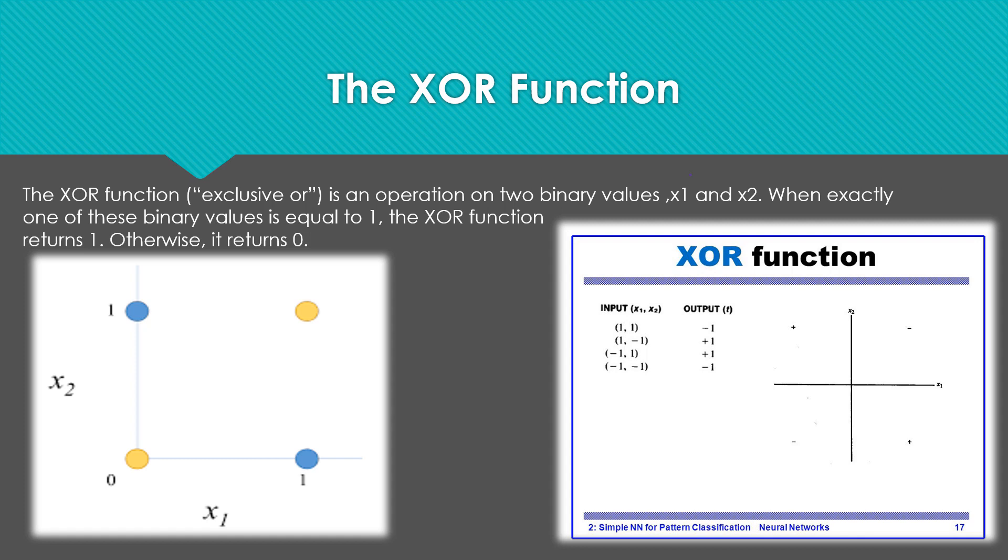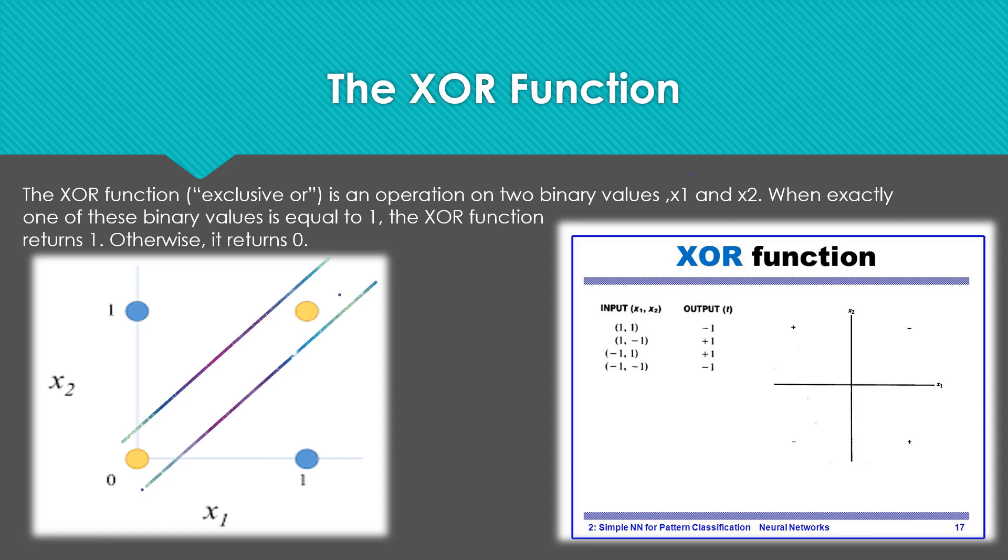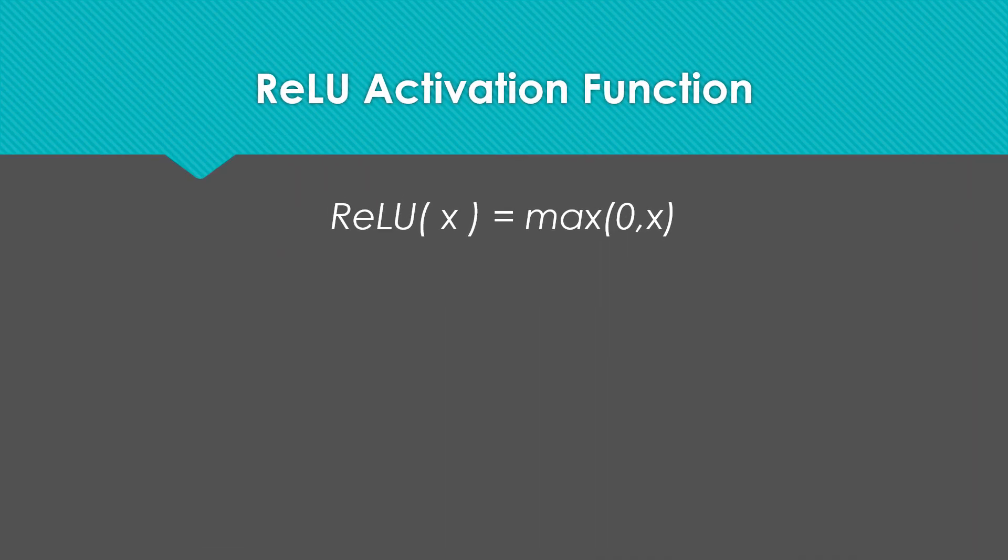That's when neural networks come in. So an ideal discriminator would predict something like this. Now let's try to see if we can do that.